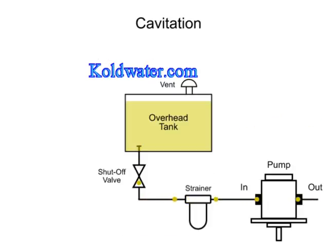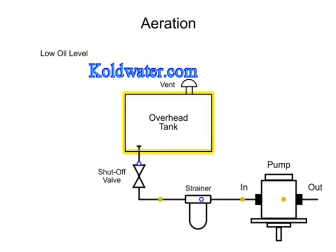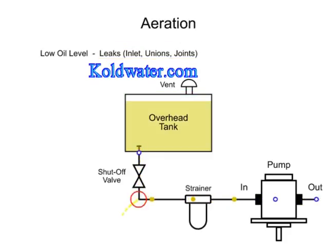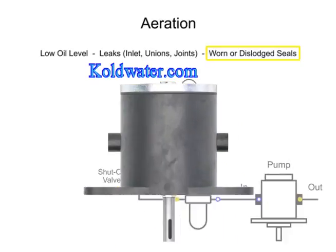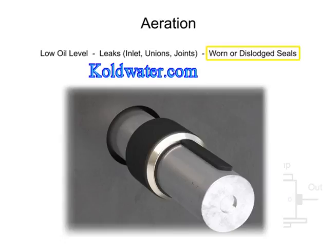Another form of cavitation is called aeration and is caused by air entering the oil stream. This can occur for a variety of reasons, including a low oil level in the reservoir, leaks in the inlet plumbing line especially at unions and joints, and worn or dislodged seals in other hydraulic components such as pumps, cylinders, or valves.